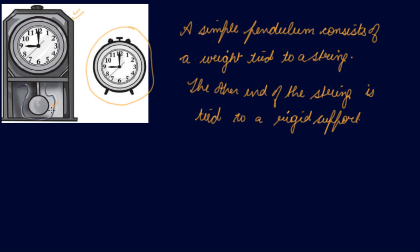This heavy metallic part is tied to one end of the string. The string is somewhere inside tied to a rigid support. The metal ball is called the bob of the pendulum.